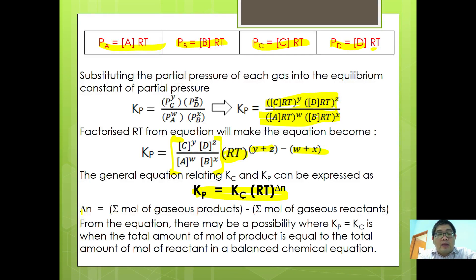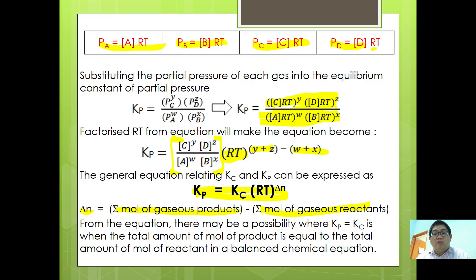The general equation is Kp = Kc(RT)^ΔN, where ΔN is the total moles of gaseous products minus total moles of gaseous reactants. Kc and Kp are equal when the total moles of gaseous products equal the total moles of gaseous reactants in the balanced equation.